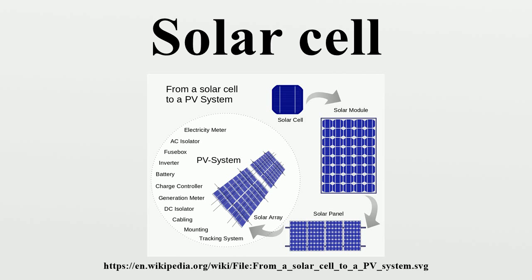The price was determined largely by the semiconductor industry. Their move to integrated circuits in the 1960s led to the availability of larger wafers at lower relative prices. As their price fell, the price of the resulting cells did as well. These effects lowered 1971 cell costs to some $100 per watt. Space application solar cells were first used in a prominent application when they were proposed and flown on the Vanguard satellite in 1958, as an alternative power source to the primary battery power source.